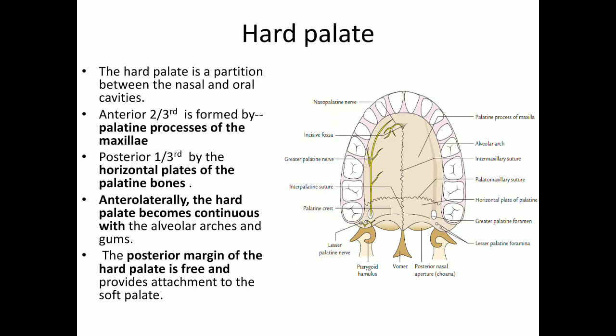The hard palate separates the nasal and oral cavity. The anterior two-thirds of it is formed by the palatine process of the maxilla, and the posterior part is formed by the horizontal plate of the palatine bones. The anterior palate is continuous with the alveolar arches and teeth, and the posterior margin of the hard palate gives attachment to the soft palate.